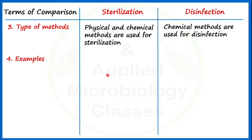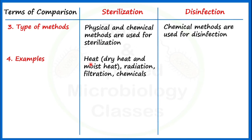Heat — mainly dry heat-based and moist heat-based sterilization — is very popular and commonly used in the microbiology laboratory to decontaminate different types of materials. Radiation is another means of sterilization, along with filtration, and rarely chemicals are also used to sterilize.